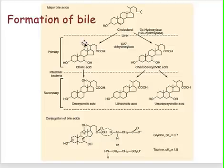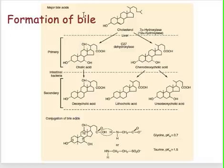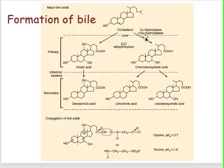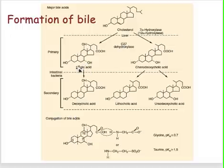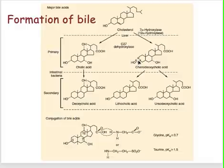The main precursor of your bile — your bile is really mostly to help you absorb food, particularly your fatty food — is mostly synthesized from cholesterol in the liver. Your cholesterol is acted upon by the enzyme 7-alpha-hydroxylase to form your chenodeoxycholic acid. If it's acted upon by C27-dehydroxylase, it becomes your cholic acid. Your cholic acid and your chenodeoxycholic acid are what we call primary bile acids.